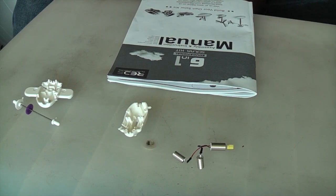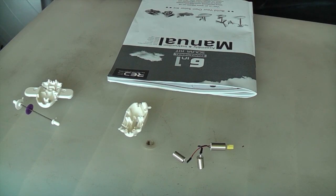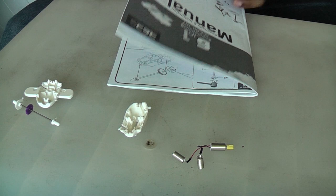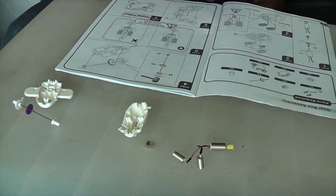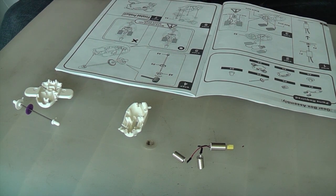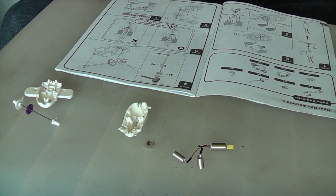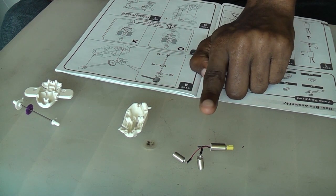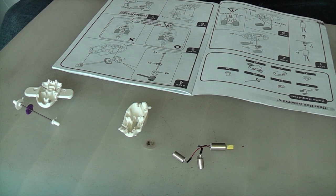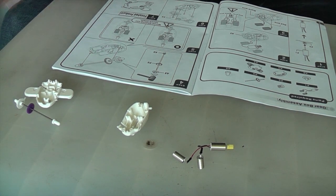With me today, I have the parts to a gearbox for a 6-in-1 solar power kit. I've already assembled some pieces together such as the motor and coils and the gear and shaft.